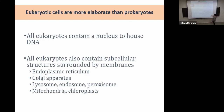Now talking about eukaryotes — the biggest difference between eukaryotes and prokaryotes is that eukaryotes have membrane-bound organelles. They also contain a nucleus, which keeps all the DNA very protected. We're going to go through those different membrane-bound organelles today to begin our discussion.